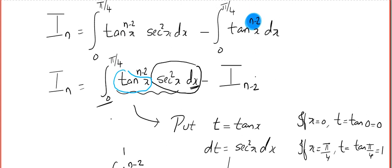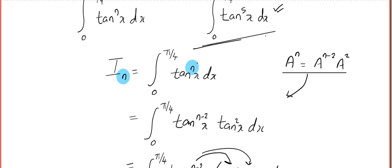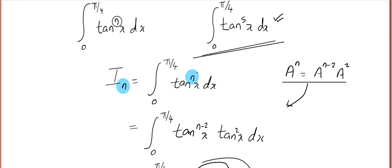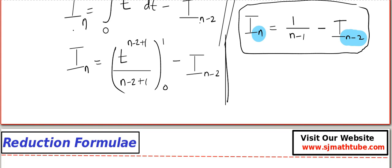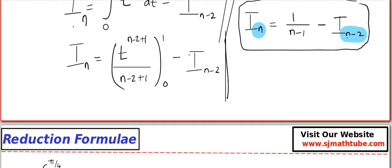They have also asked us to evaluate I₅. If tan^n(x) is I_n, then tan^5(x) corresponds to I₅. Now we note that the formula reduces n in steps of 2. If you start with an even number, say 8, it goes 8, 6, 4, 2, 0. If you start with 7, it goes 7, 5, 3, 1. So there are two ultimate integrals depending on whether n is even or odd.